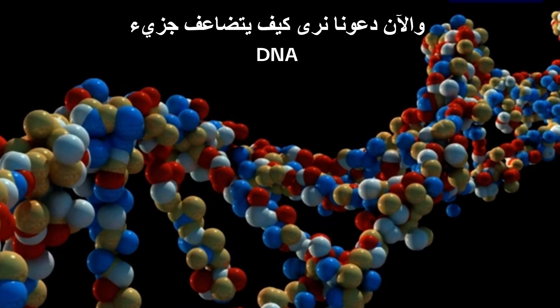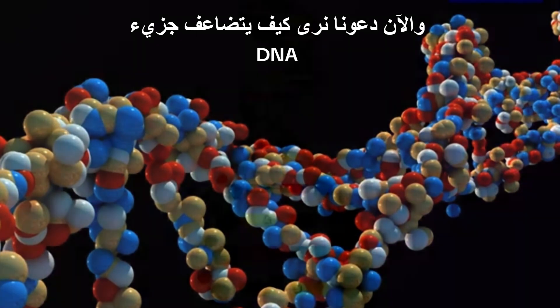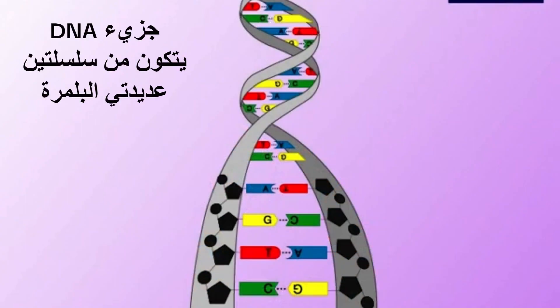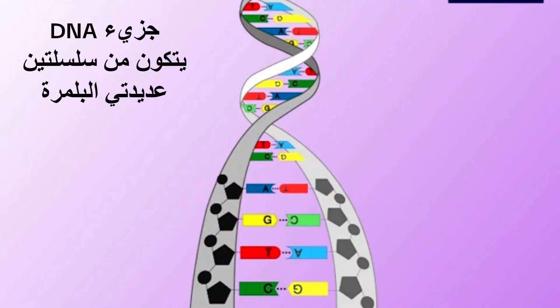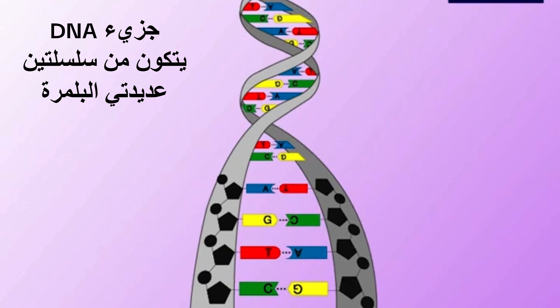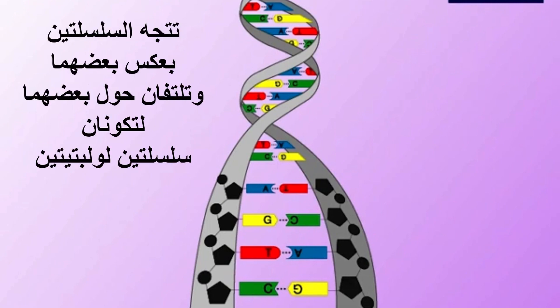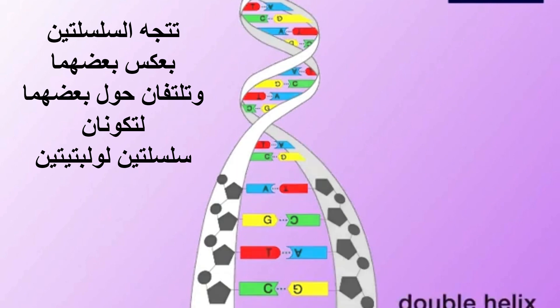Now let's see how a DNA molecule replicates. A DNA molecule consists of two polynucleotide chains. The chains run in opposite directions and twist around each other to form a double helix.